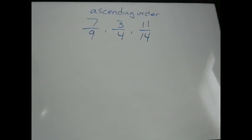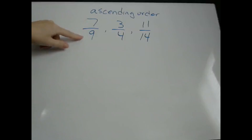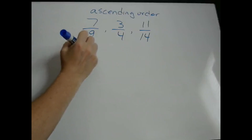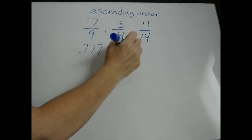I'm going to show you two ways to do this. One way, which I think is the simplest way, if you're allowed to use a calculator on this type of problem, is to simply use your calculator and do the division. Remember, every fraction just means the top number divided by the bottom number. So you just plug into your calculator 7 divided by 9 and you'll get something like 0.777. 3 divided by 4 gives 0.75.